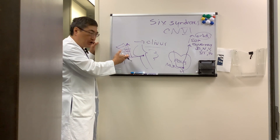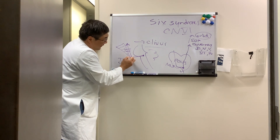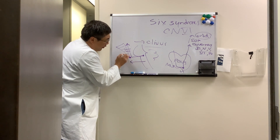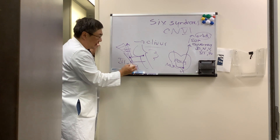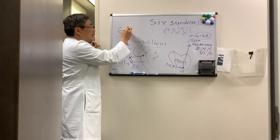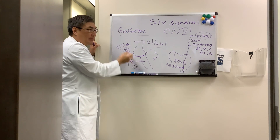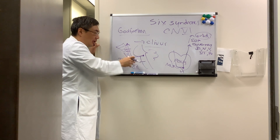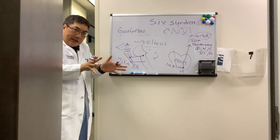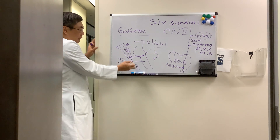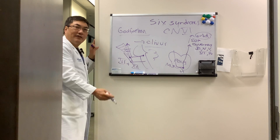A very interesting finding is that the lower clivus can involve cranial nerve 12, and the combination of a sixth plus a twelfth is called Gottfritzen syndrome. The six-twelve combination pretty much localizes to the clivus because all other cranial nerves — seven, eight, nine, ten, eleven — exit and go laterally. The only midline cranial nerves are six and twelve.